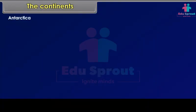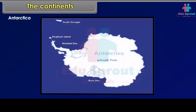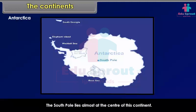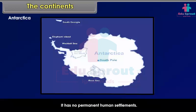Antarctica is completely in the southern hemisphere. It is a continent larger than Europe and Australia put together. The South Pole lies almost at the centre of this continent. Hence, the continent is permanently covered with thick ice sheets and has no permanent human settlements.